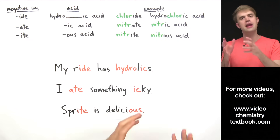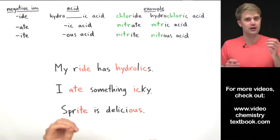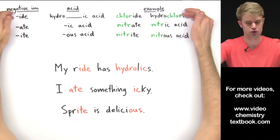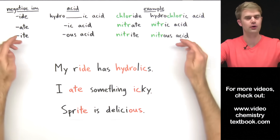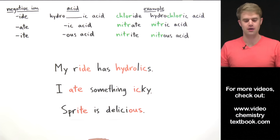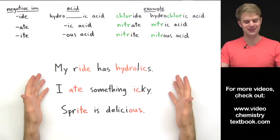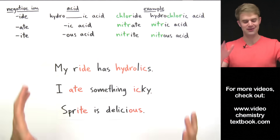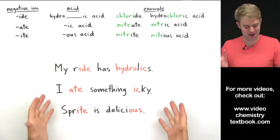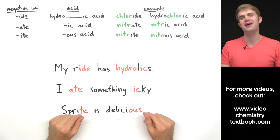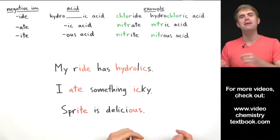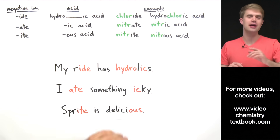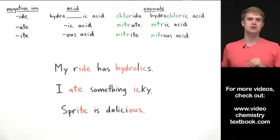So that's how we name acids: we look at the negative ion they contain, look at the end of that negative ion, and use the rules to figure out what to call the acid. Definitely learn the mnemonic so naming will just make sense. And check out my next video which has a lot of example problems so you can get plenty of practice with this.